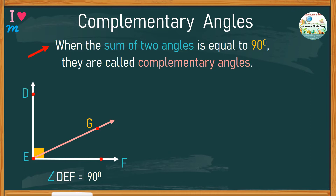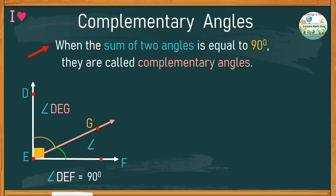Now we have two angles adjacent to each other, or next to each other, sharing the same side. Angle DEG is the complement of angle GEF. So, if the measurement of angle DEG is 60 degrees, what would be the size of angle GEF?